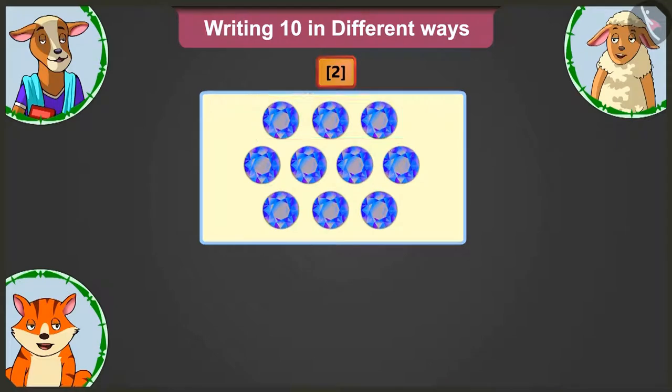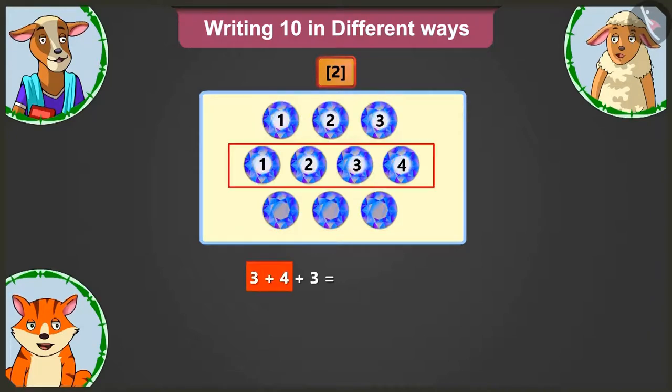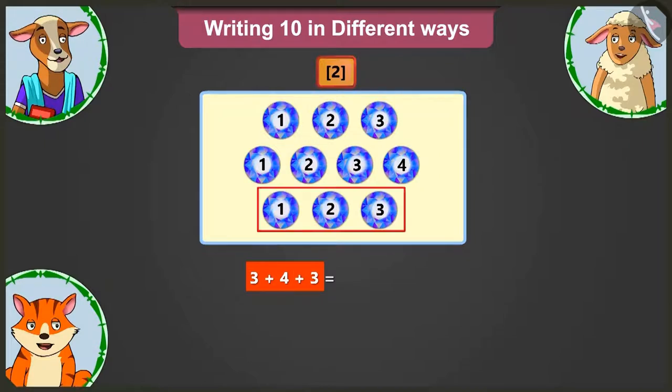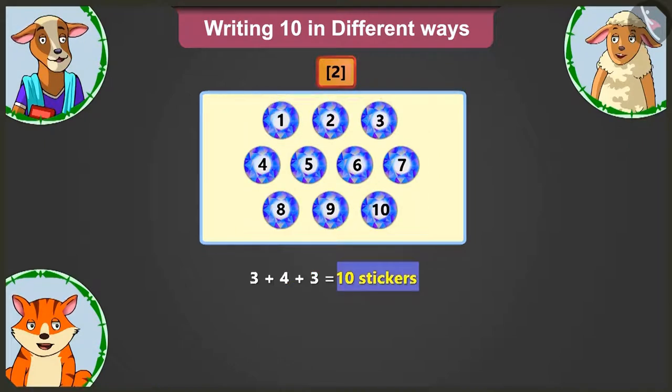On the second card, there are 3 in the first row, 4 in the second row and 3 stickers in the third row. So here, we will write 3 plus 4 plus 3 equals 10 stickers. Very good, Lily.